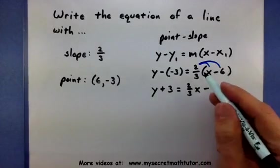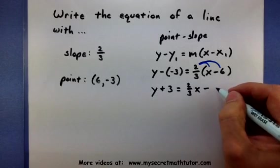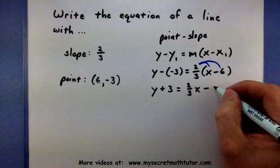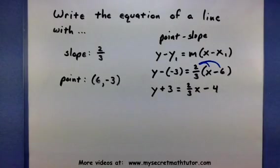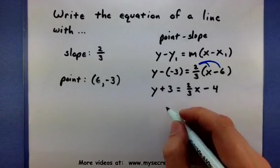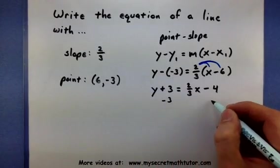Let's see. 6 times 2/3, looks like we have a 4. Alright, let's get this y all alone by subtracting 3 from both sides.